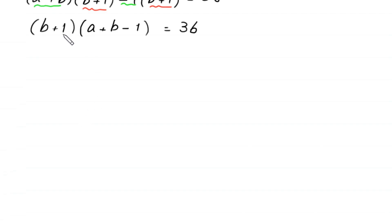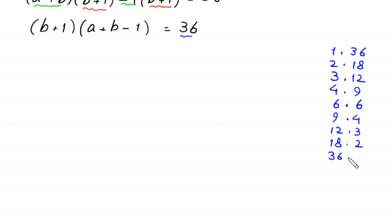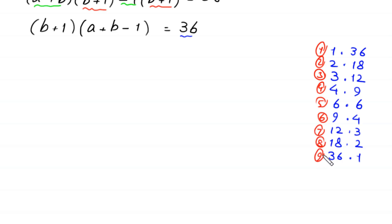Now we have two factors on the left side and 36 can be factorized as 1×36, 2×18, 3×12, 4×9, 6×6, 9×4, 12×3, 18×2, and 36×1. So we have 9 cases to solve.